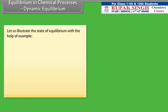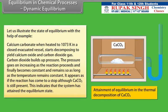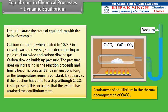To illustrate the state of equilibrium: calcium carbonate, when heated to 1073 Kelvin in a closed evacuated vessel, starts decomposing to yield calcium oxide and carbon dioxide gas. Carbon dioxide builds up pressure which goes on increasing as the reaction proceeds and finally becomes constant, so long as the temperature remains constant. It appears as if the reaction has stopped, although CaCO3 is still present. This indicates that the system has attained the equilibrium state.